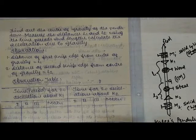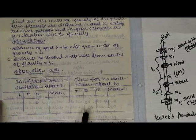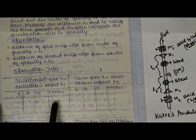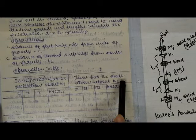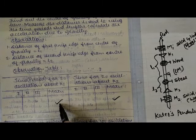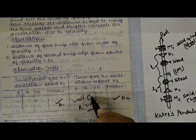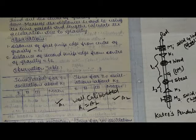The distance of the first knife edge from the centre of gravity is L1, and the second is L2. For the calibration observation table, we record the time period for 20 oscillations — trials T1, T2, T3 — and take the mean, both about K1 and K2. We call those means A1 and A2. If A1 and A2 are exactly the same, the Kater's pendulum is well calibrated and we can proceed to determine the value of acceleration due to gravity.